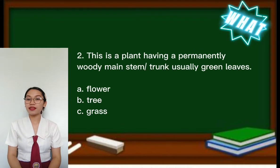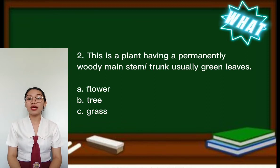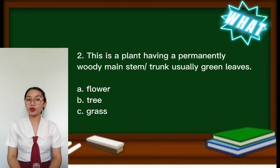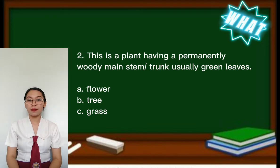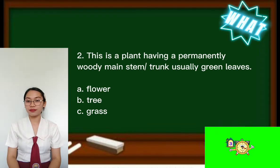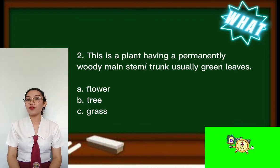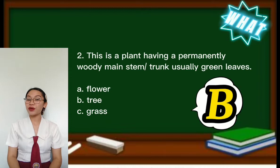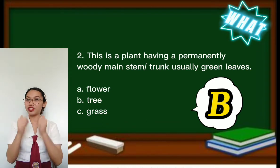Number 2. This is a plant having a permanently woody stem or trunk, and usually green leaves. A. Flower, B. Tree, C. Grass. If your answer is the letter B, you got the right answer. Good job!